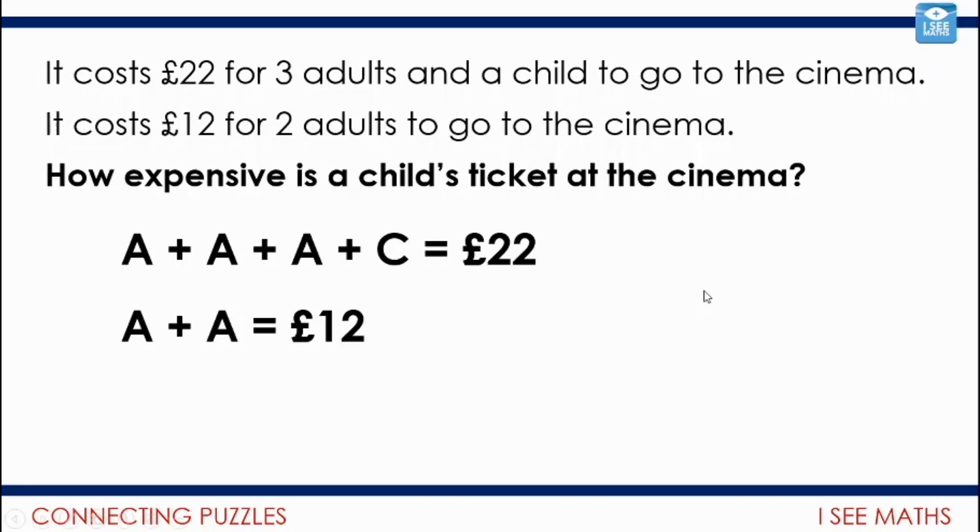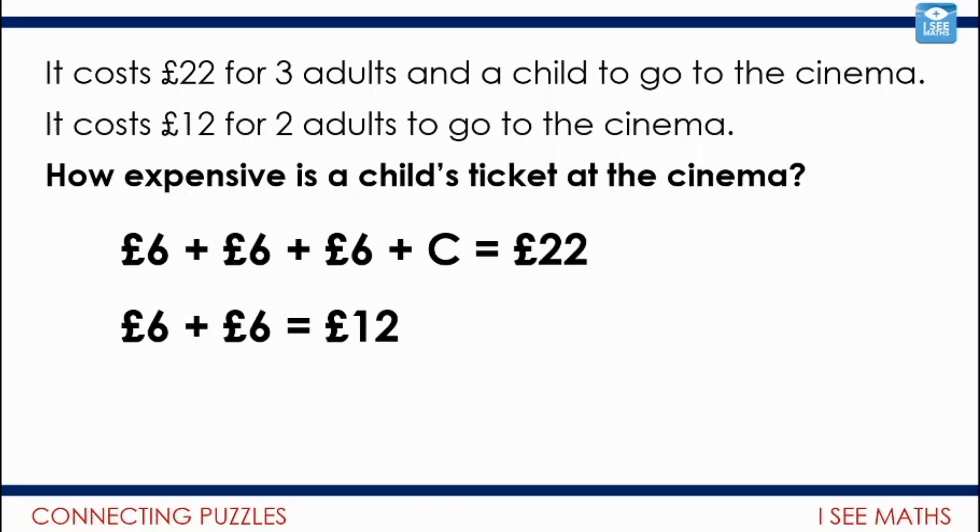So to work out the value of each adult ticket, well, two is £12. So of course, each one is £6. So I've just changed that number sentence slightly. And now I just need to look at that top one. Three lots of six is £18. So a child's ticket must be £4. And I think the key skill is being able to interpret those words and simplifying it in the way that I wrote those number sentences.